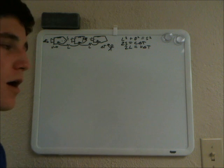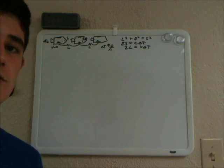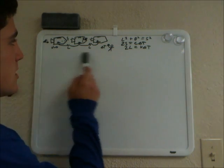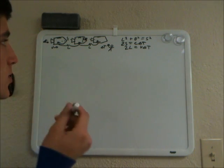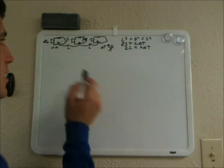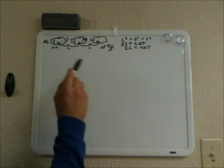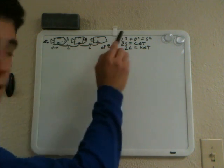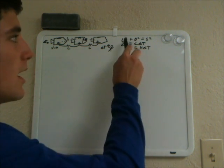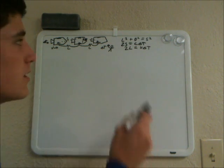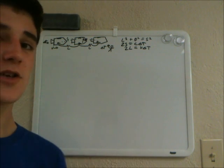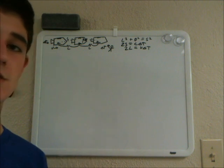Here we are with our derivation of time dilation and length contraction in special relativity. In the last video, we used this thought experiment to derive these equations. We have the person with delta T compared to delta T naught for somebody in the reference frame of the spacecraft with this light clock. And we have these relationships: L squared plus D squared equals S squared; 2S equals C delta T; and 2L equals V delta T.